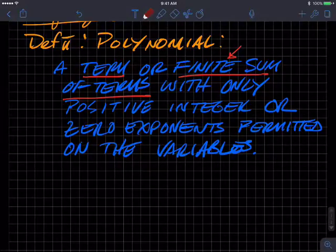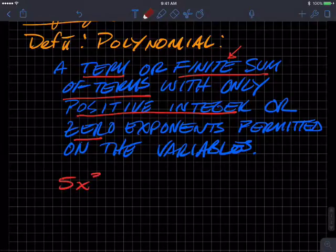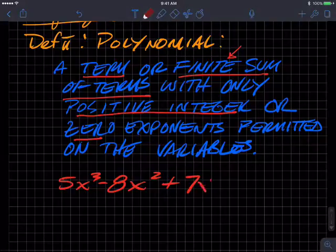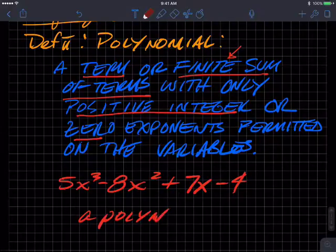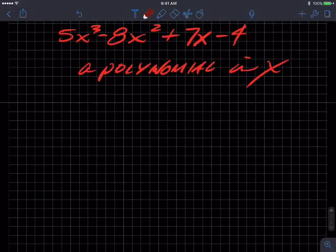And they have to have positive integers. Examples of positive integers, two, seven, 15, but not negative three, et cetera, or zero as the exponents. Okay. So here's an example, five X cubed minus eight X squared plus seven X minus four. This is a polynomial, almost went to cursive again, in X, a polynomial in X. So that's that guy.